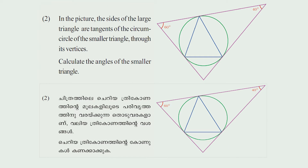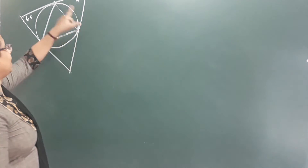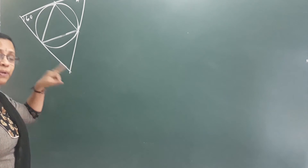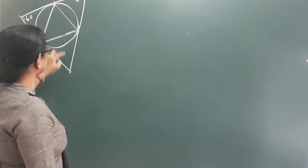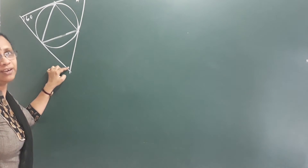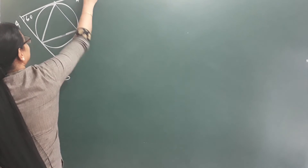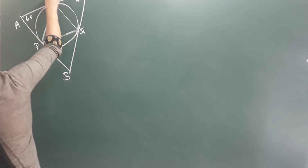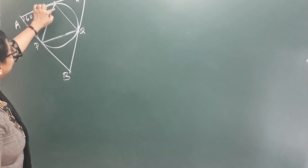In the picture, the sides of the large triangle are tangents to the circumcircle of the small triangle through its vertices. Calculate the angles of the smaller triangle. This concept is about the opposite: now you have to find the angles of the inner triangle. If some angles are missing in the third triangle, something must be found using the angle sum property.